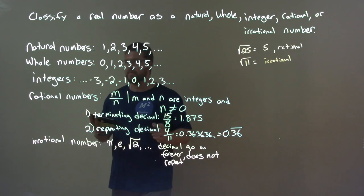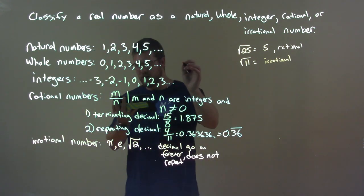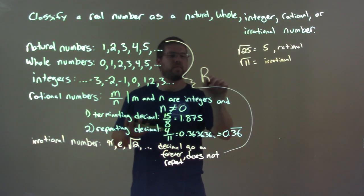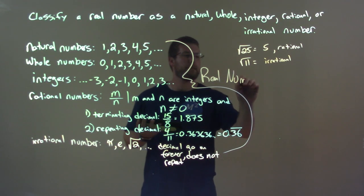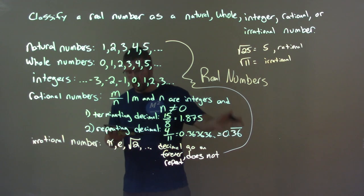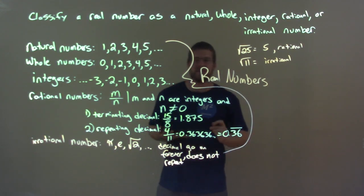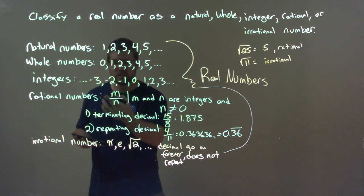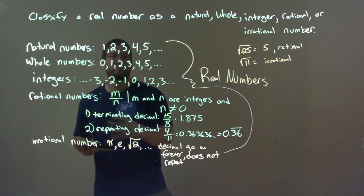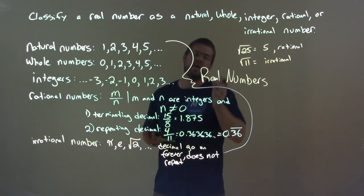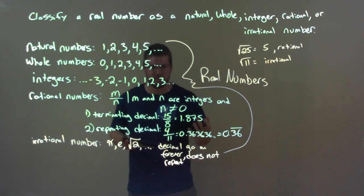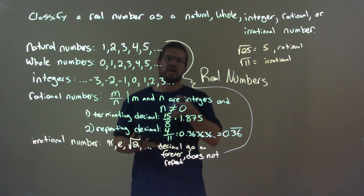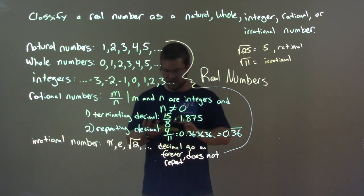All of these numbers we've classified — natural, whole, integer, rational, and irrational — are known as the real numbers. All of these are our real numbers, and they're pretty much all the numbers you will end up dealing with most of the time.